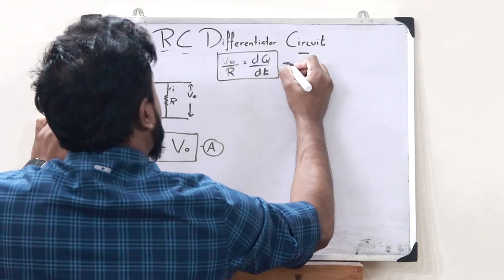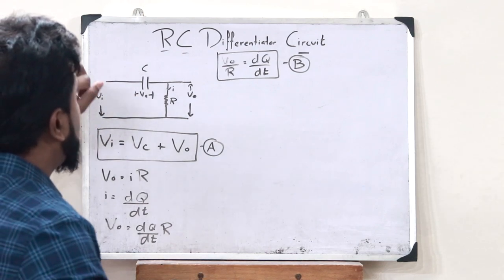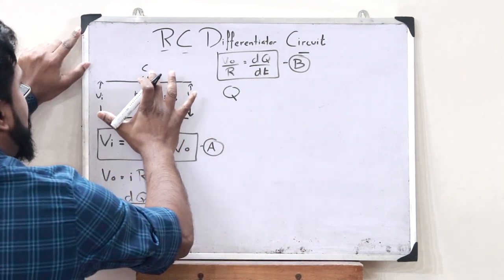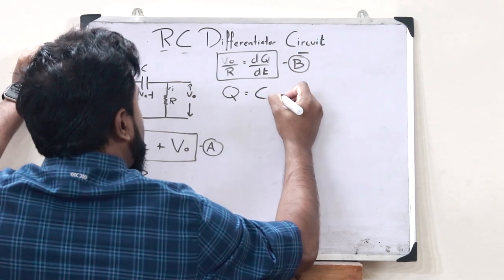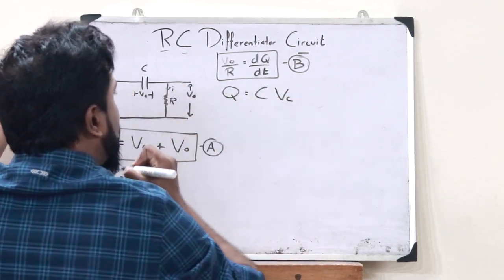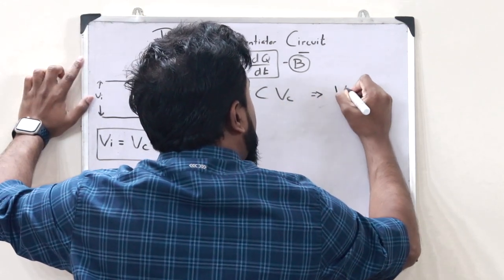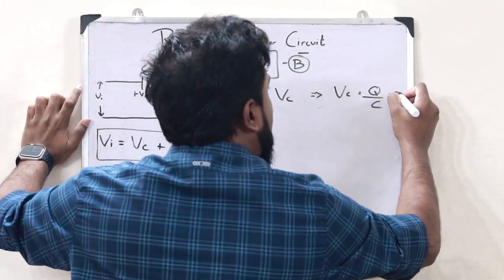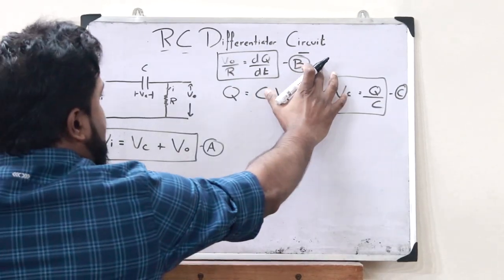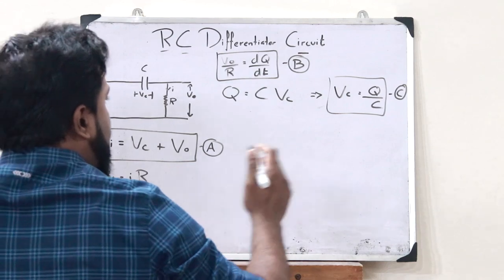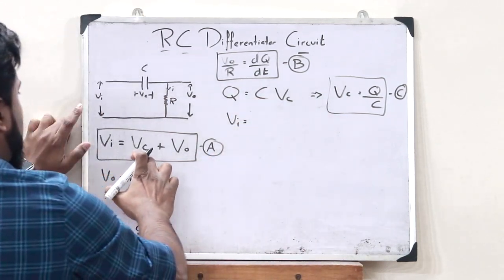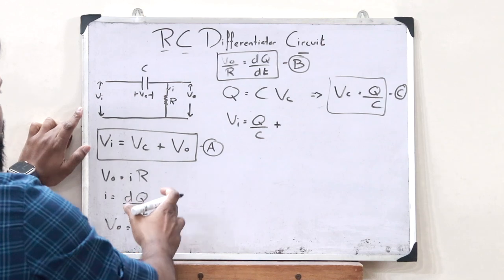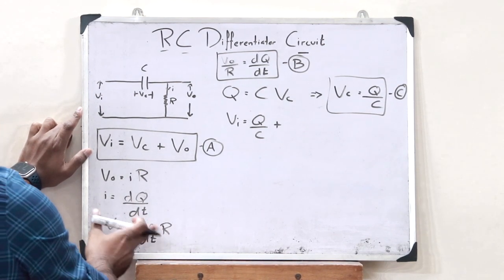Now, across this capacitor C, according to the capacitance law, Q — the amount of charge accumulated at the capacitor — is equal to C times the voltage drop across the capacitor Vc. Rearranging this, we get Vc equals Q by C. Let us call this equation C.